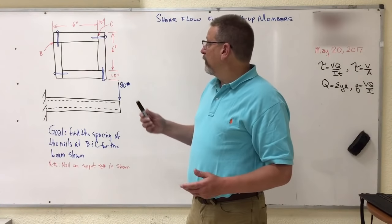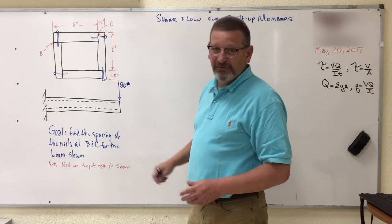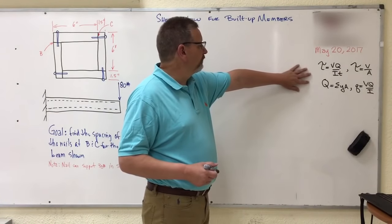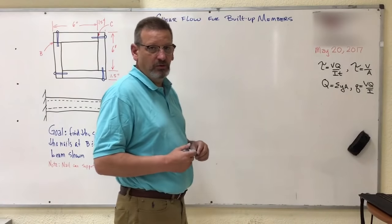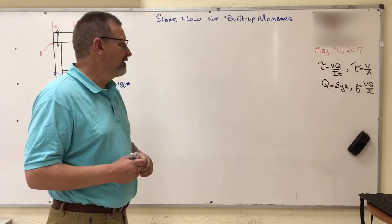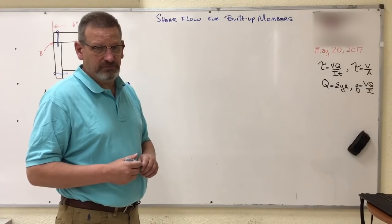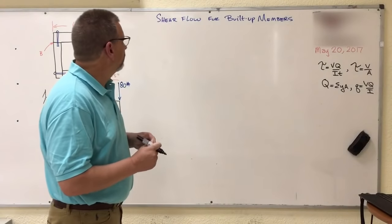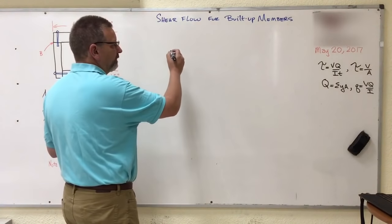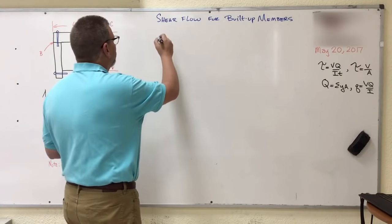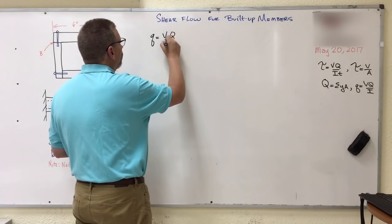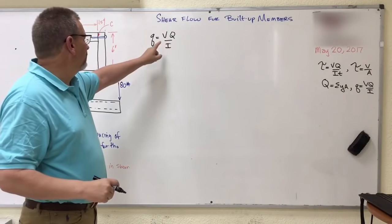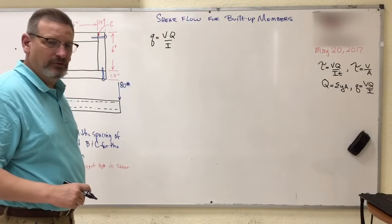We're trying to find the spacing of the nails. We're going to use this equation here, Q equals VQ over I, the shear flow equation. And then we'll use the spacing equation to come up with the end of it. So what we have here is Q equals VQ over I. So I guess we need to find these things, right? V and I are pretty simple. Let's see if we can find those first.